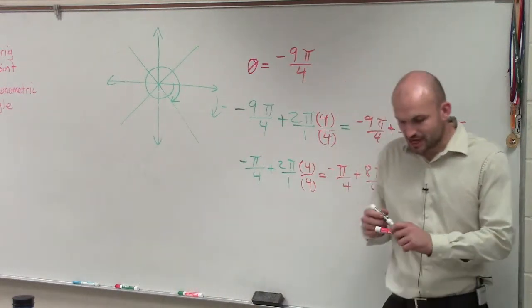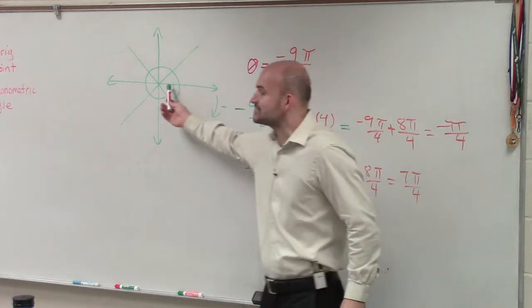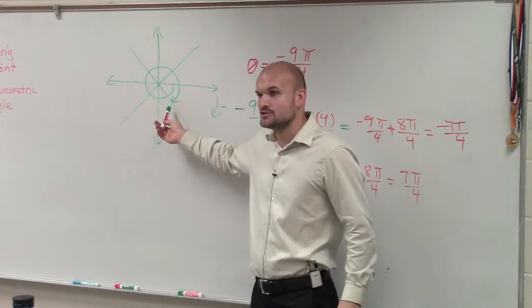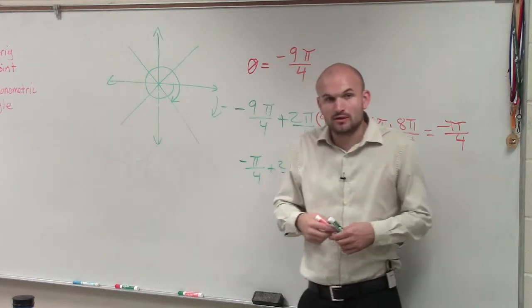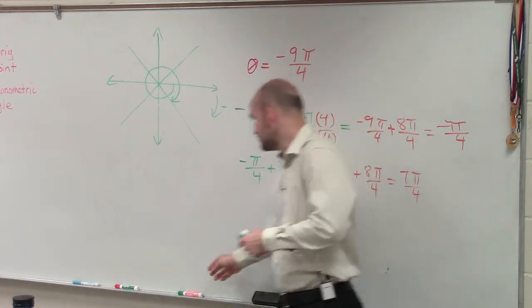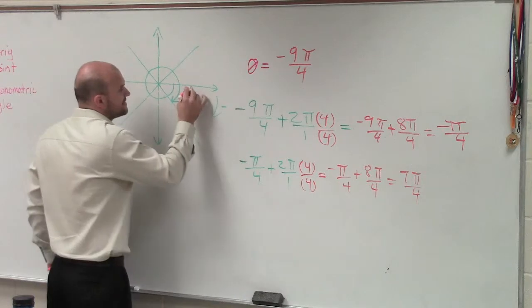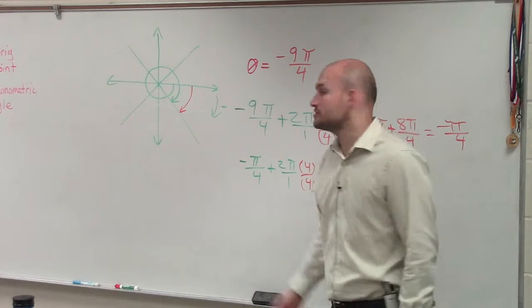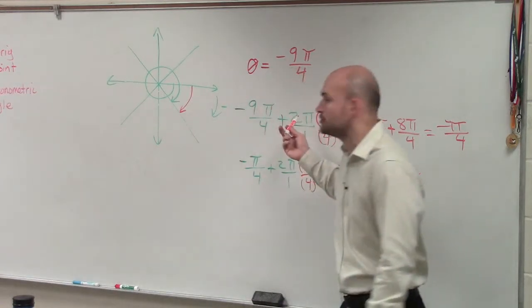But ladies and gentlemen, remember all a coterminal angle says, it has to start here and it has to end here. So what's the smallest angle or the largest negative angle I can do? I can just say this, right? That is an angle in the negative direction. So to get to that thing, all I had to do was add 2π.